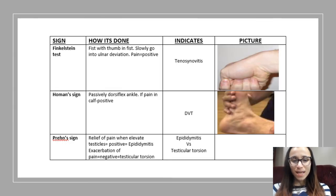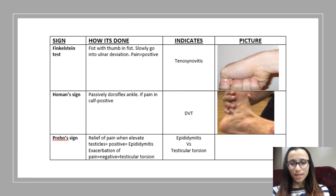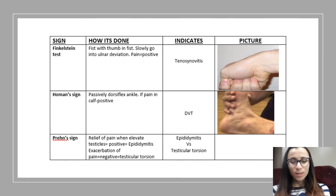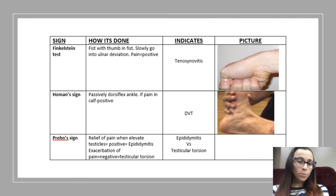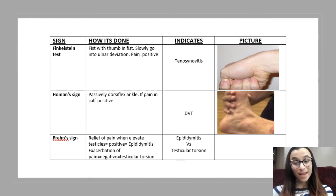Next we go on to the Finkelstein test. You're going to have your hand in a fist with the thumb inside, and slowly go into ulnar deviation. If there's pain, it's positive for tenosynovitis. Homans sign: the ankle is passively dorsiflexed — if there's pain in the calf, it's positive for DVT.